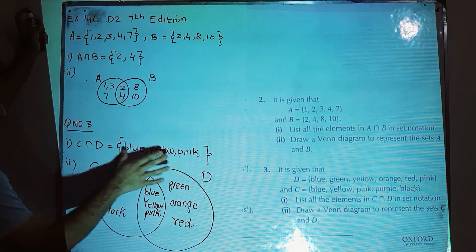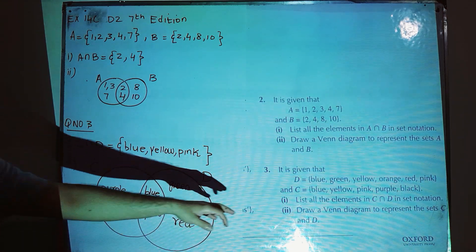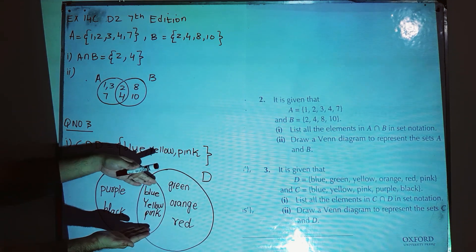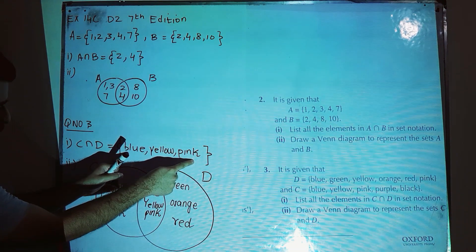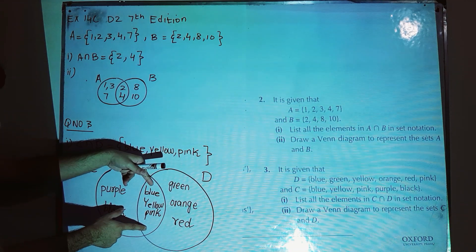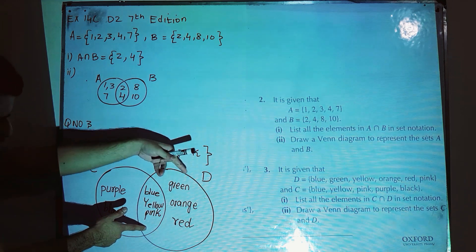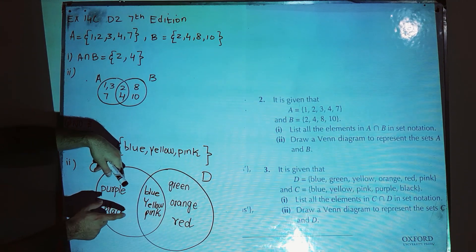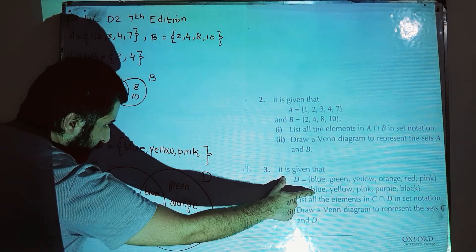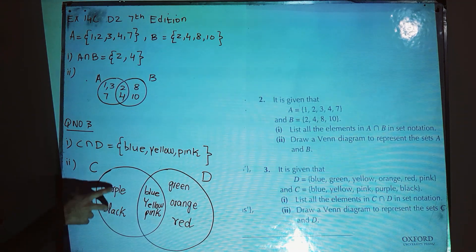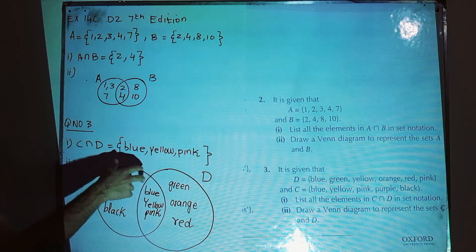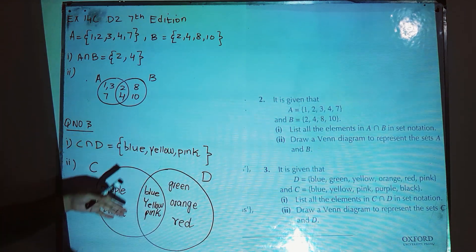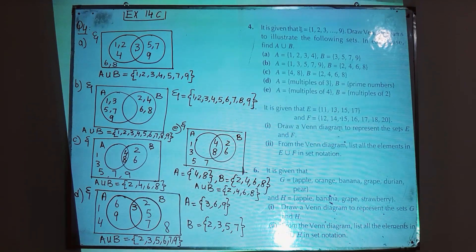Part two says draw a Venn diagram to represent sets C and D. Draw two overlapping circles; the overlapping section includes elements common to both C and D. Write blue, yellow, and pink in the overlapping part. The remaining elements of C — purple and black — are written in C's exclusive section. The common elements from D are already in the overlap; the remaining elements of D go in D's exclusive section.